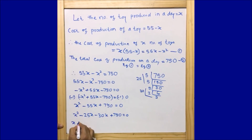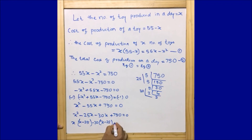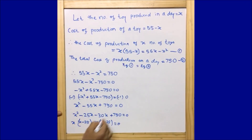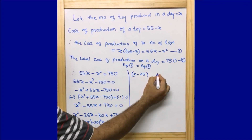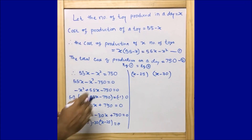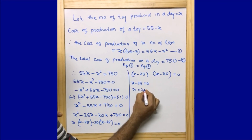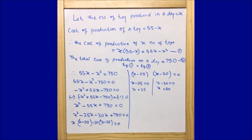Taking x common from the first two terms: x(x minus 25), and minus 30 common from the last two: minus 30(x minus 25), giving (x minus 25)(x minus 30) equals 0. So our two factors are x minus 25 and x minus 30. Therefore x minus 25 equals 0, giving x equals 25, or x minus 30 equals 0, giving x equals 30. We got two values of x: 25 and 30.